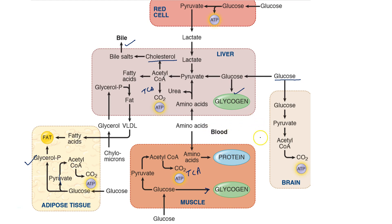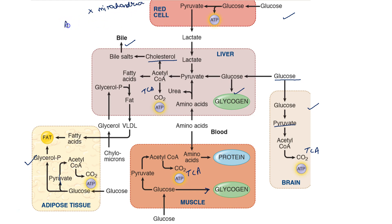The brain and RBC are dependent on glucose for their energy. In the brain, glucose enters, glycolysis occurs, and pyruvate forms acetyl-CoA which takes part in the TCA cycle. In the RBC, glycolysis occurs to form pyruvate, and because RBC does not have any mitochondria, anaerobic glycolysis occurs here.